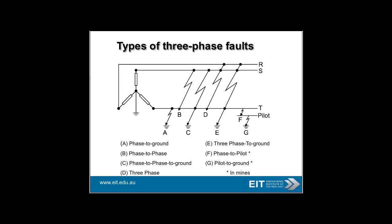Here are the types of three-phase faults on a good old three-phase diagram. You've got a star network with a star connection down to earth — the central point is earth. Type A is phase to ground. B is phase to phase — between phases. C is phase to phase to ground. D is three-phase. E is three-phase to ground. And finally, a few other faults: phase to pilot and pilot to ground — those are common in mines.